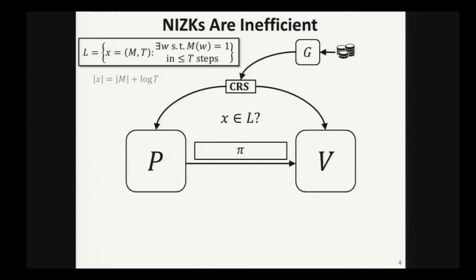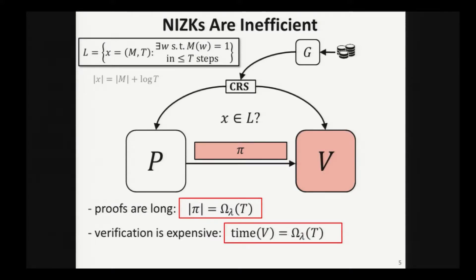To tell you about these inefficiencies, I'm going to use a concrete language, some universal language L, consisting of pairs M and T, where M is a machine, T is a time-bound represented in binary, and a pair M-T is in the universal language if you can find a witness that makes the machine accept in at most T steps. Now, in classical NIZK constructions, usually the proof is very long. It grows linearly with T. Similarly, the verification of the proof is also expensive. The running time of the verifier also grows linearly with T. And finally, maybe sometimes we don't think about the poor prover, but he also has some space complexity, and usually his space complexity also grows with the time-bound T. So it's paying in space for time.